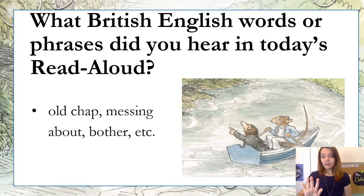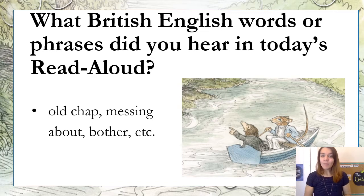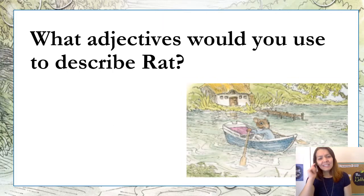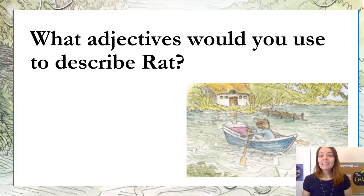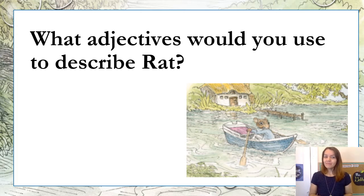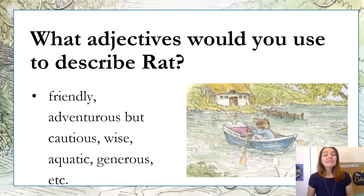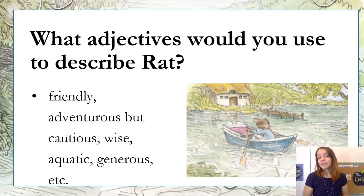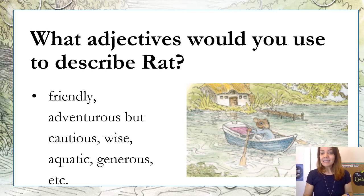If you need to pause the video, go ahead and take these words and put them in your Google document. Make sure you click inside the yellow box underneath British English. What adjectives would you use to describe Rat? Adjectives are words to describe a noun — a person, place, or thing. You could say that he was friendly — he took Mole in right away. He's adventurous but cautious; he doesn't want to go somewhere he hasn't been before. He's wise, aquatic, and he's generous. Take some of these examples, or some of your own, and fill in the chart where it says 'describe Rat.'